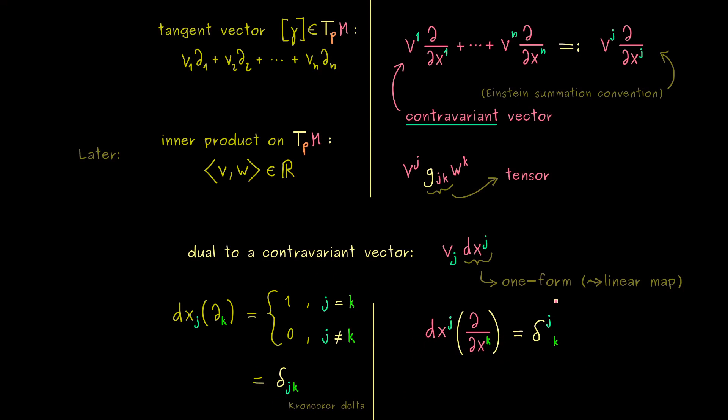Okay, now I think that's enough for calculating with indices for the moment. In the next video, I want to define such one-forms here. And as you already see it here, we will define it as linear maps going from the tangent space to R. Okay, then let's meet in the next video and have a nice day. Bye-bye.